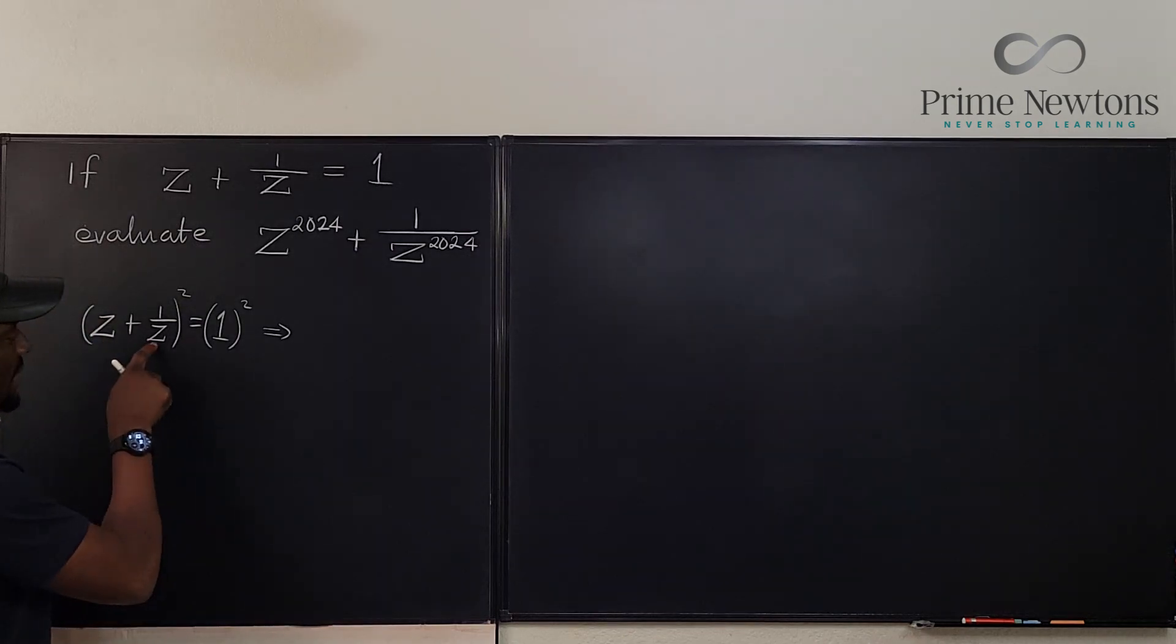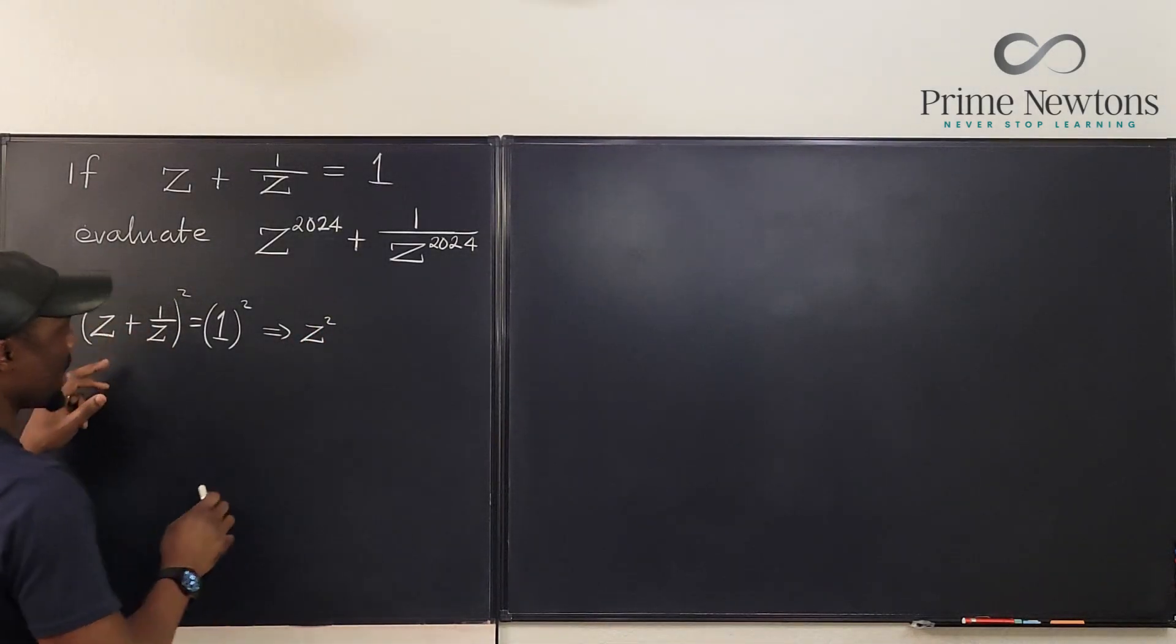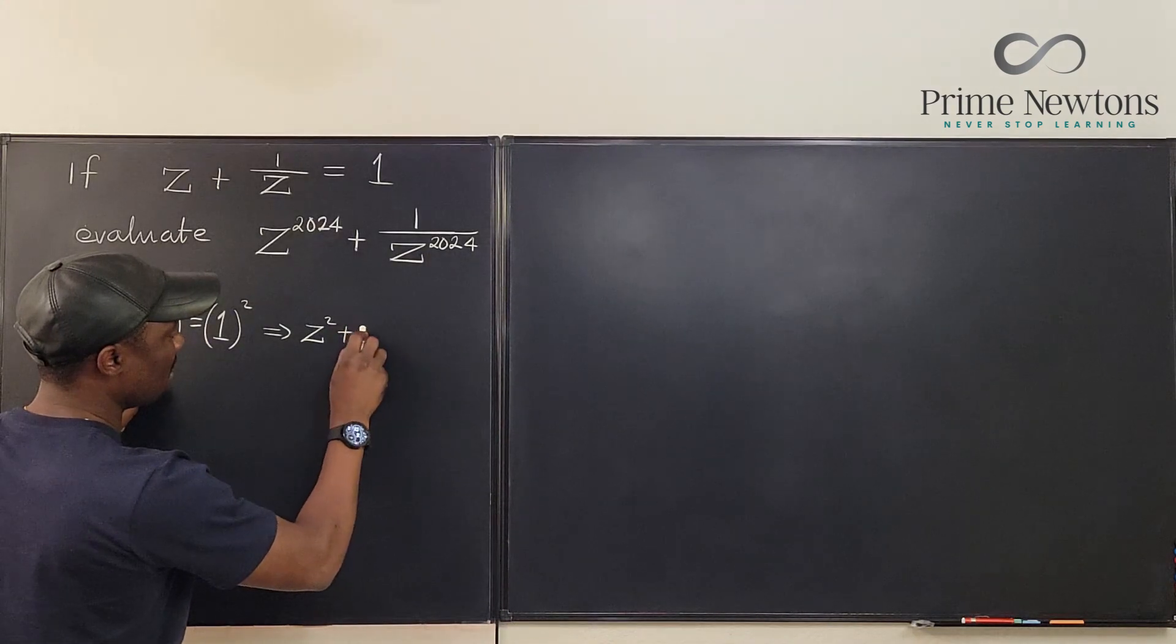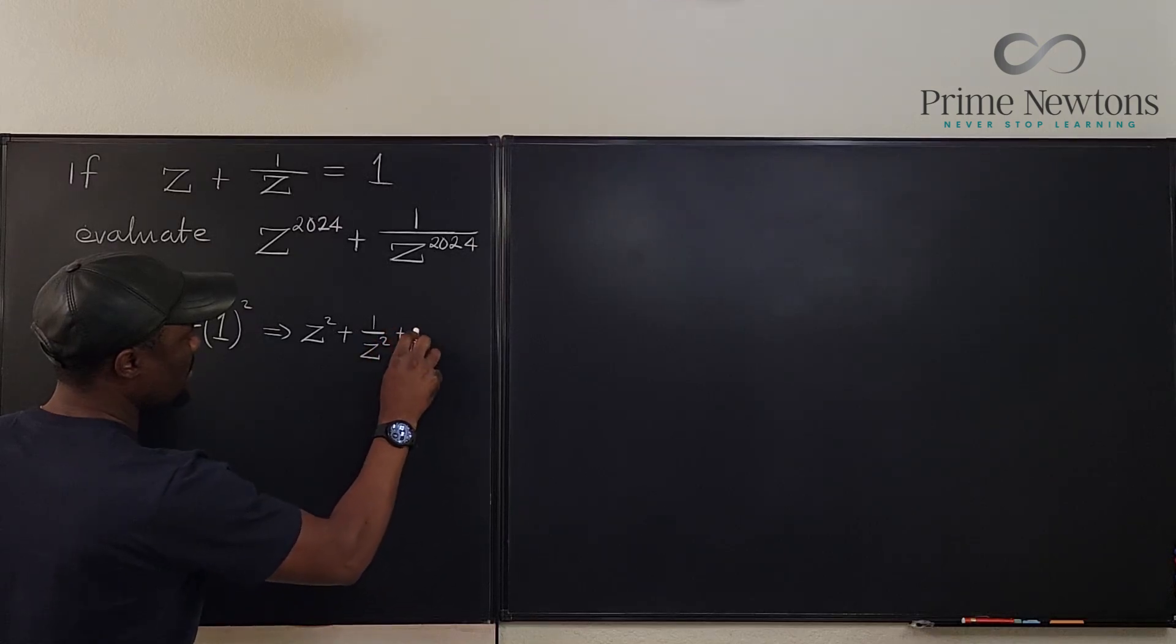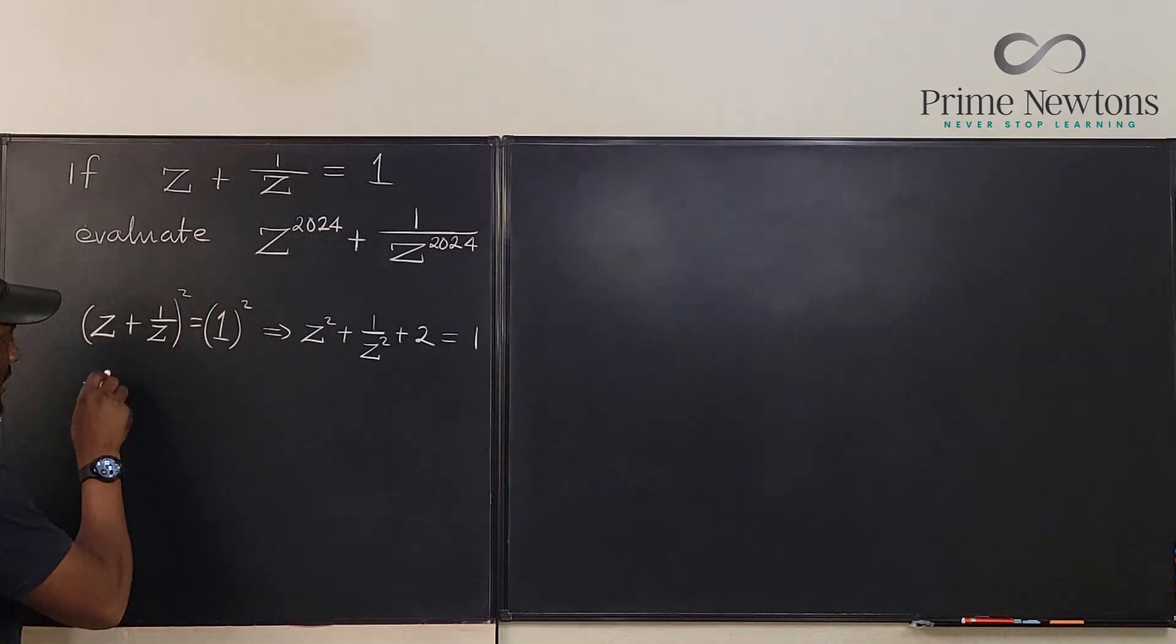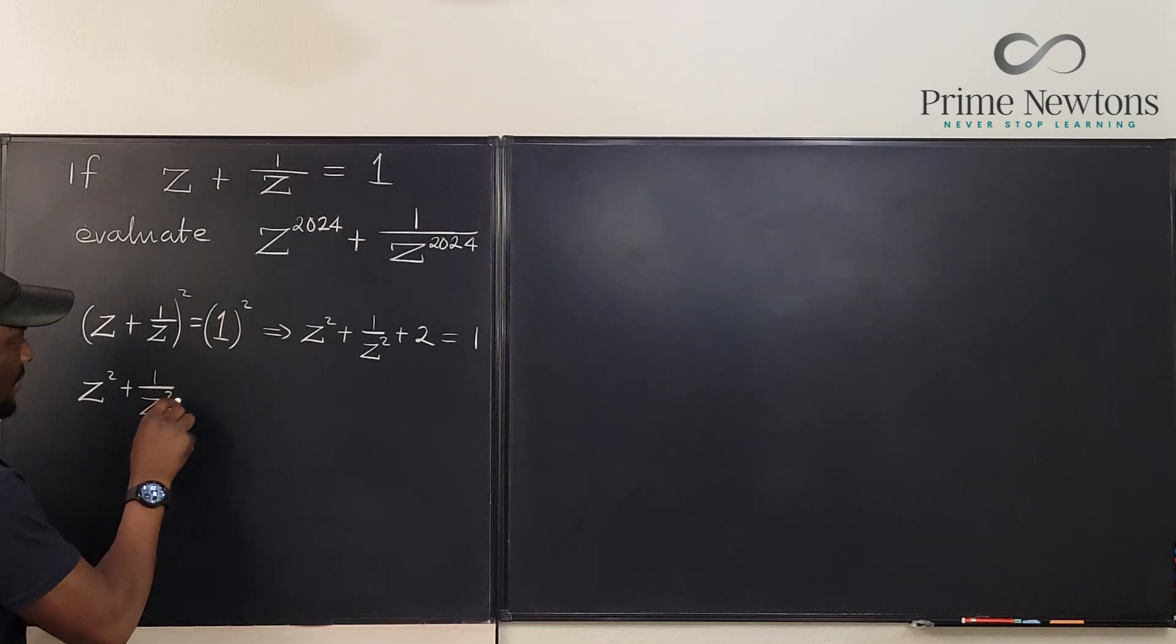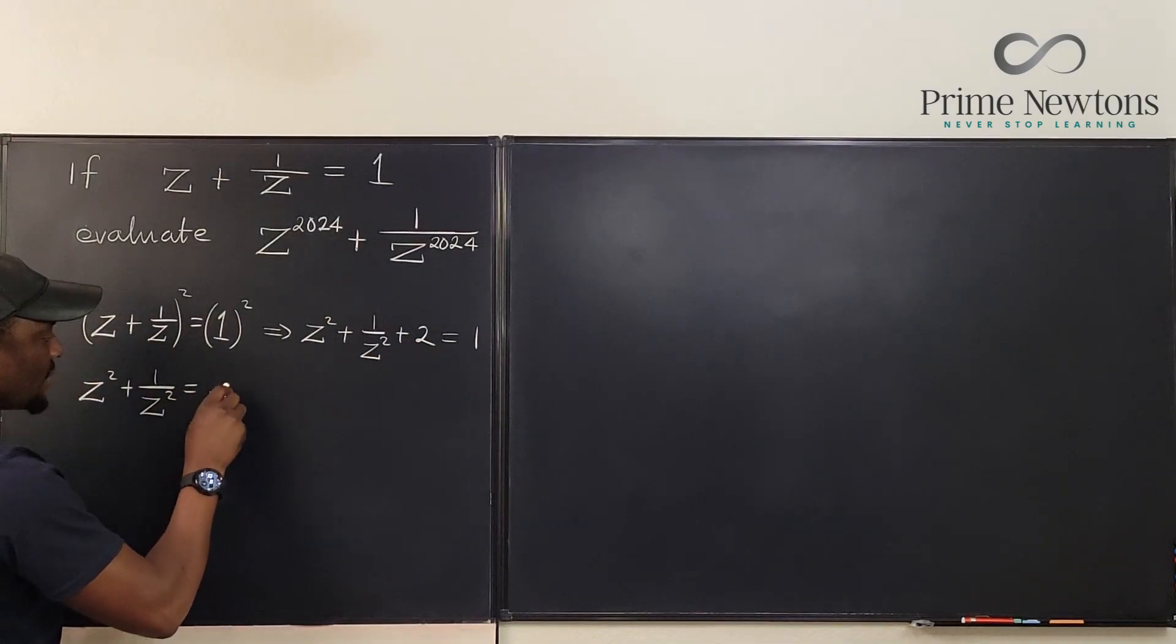You notice that if you square this, you're going to end up with z squared. Then you multiply this by this, you're going to get 1. Ultimately, you're going to get 1 over z squared plus 2. And the square of 1 is equal to 1. So this tells us that z squared plus 1 over z squared equals, if you subtract 2 from this, you're going to get minus 1.